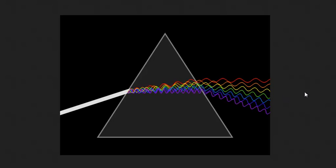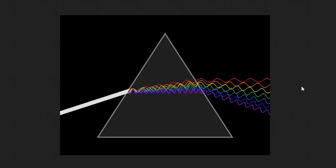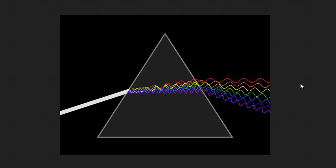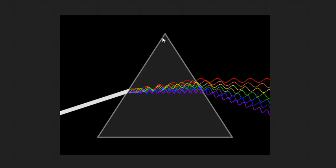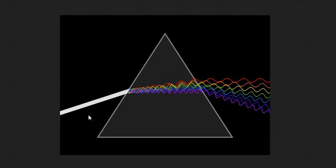Isaac Newton looked at this in detail, and before him scientists thought that it was the prisms that actually coloured the white light somehow.